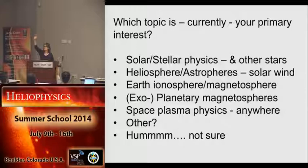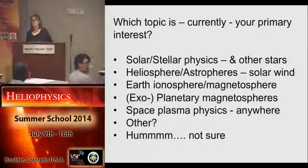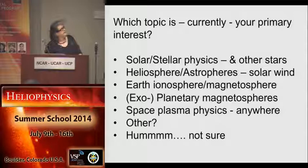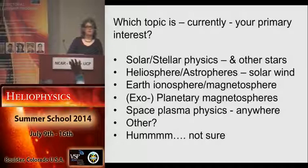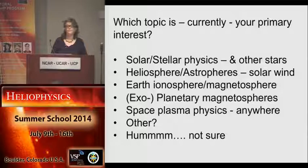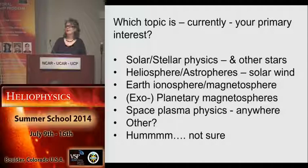Look around and see who your fellows are. Heliosphere, astrospheres, solar wind — okay, a reasonable number there. How about Earth ionosphere, magnetosphere? Great. Exoplanet or planetary magnetospheres? He's put his hand up for every single one. You can have multiple interests — that's okay. All of you people, all the gray hairs around here have multiple answers.